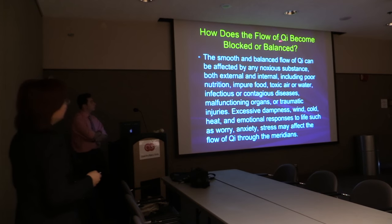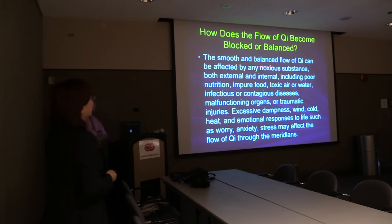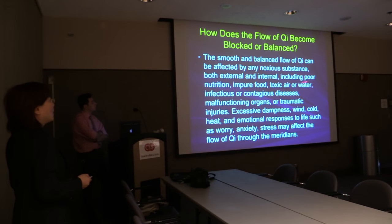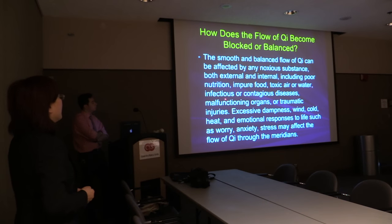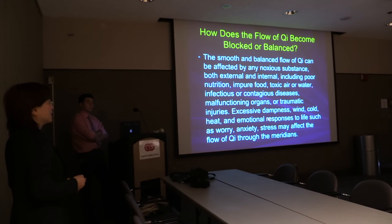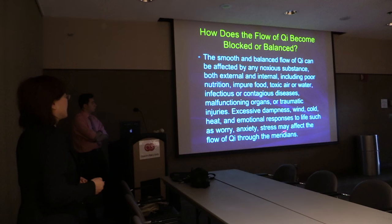How does the flow of qi become blocked or imbalanced? The smooth and balanced flow of qi can be affected by numerous substances, both external and internal, including poor nutrition, impure food, toxic air or water, infectious or contagious disease, malfunctioning organs, or traumatic injuries. External factors such as wind, cold, heat, or emotional responses to life — such as worry, anxiety, and stress — may also affect the flow of qi through the meridians.